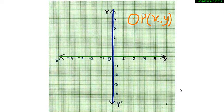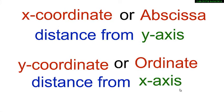The convention is to give the x-coordinate, or the abscissa, first and the y-coordinate, or the ordinate, second. The x-coordinate of a point in Cartesian coordinates is its distance from the y-axis. The y-coordinate of a point in Cartesian coordinates is its distance from the x-axis.